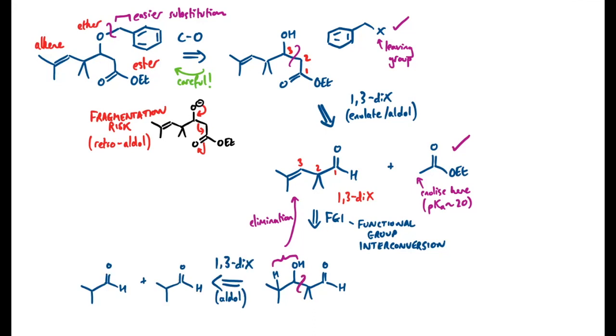This is a sign of a good disconnection. Isobutyraldehyde is cheap and readily available, and here we can just do a self-reaction, where we can form the enolate on one of the aldehydes, and that's nucleophilic for any remaining aldehyde that's there, and we can get an aldol reaction like this.